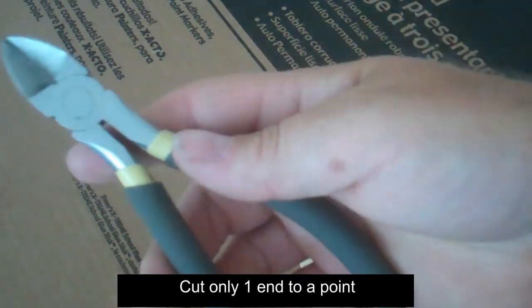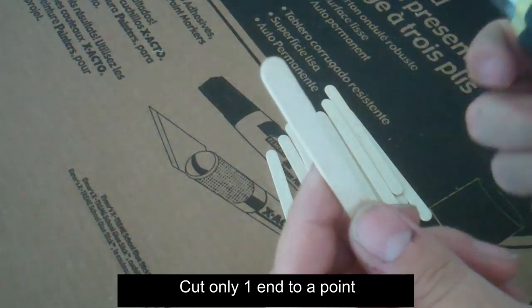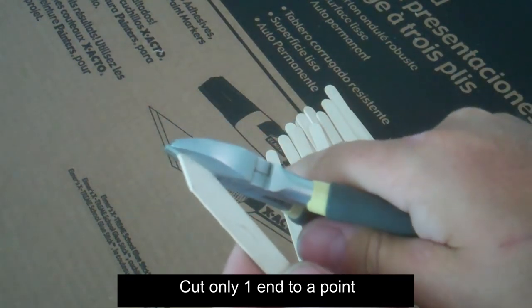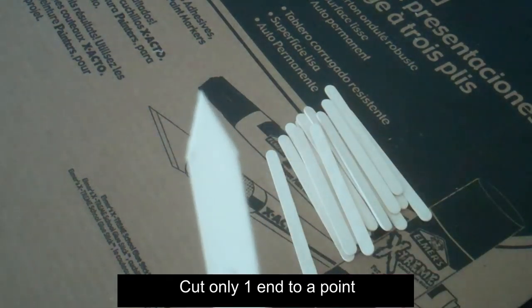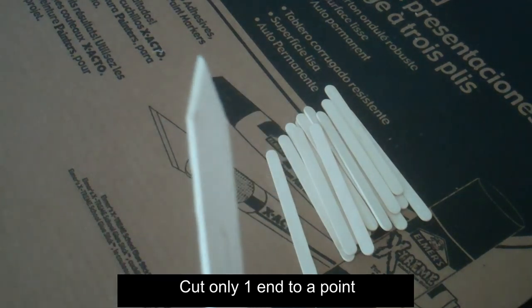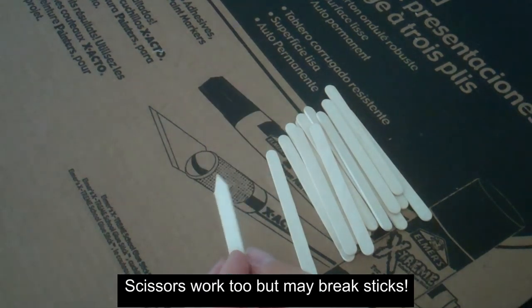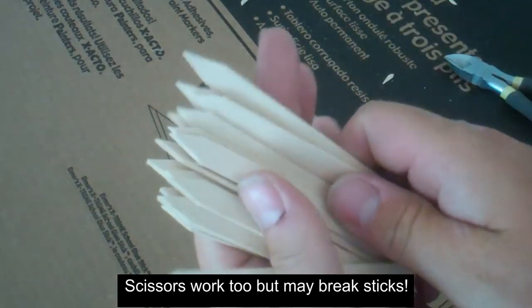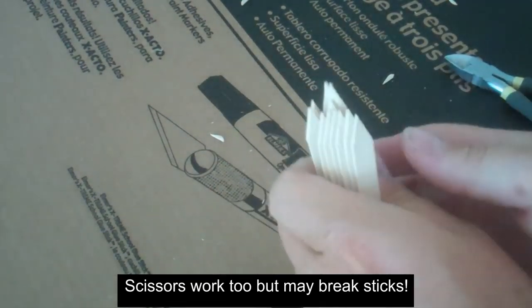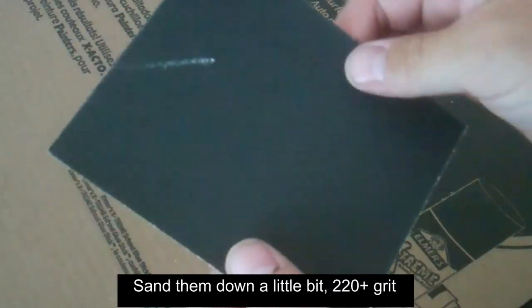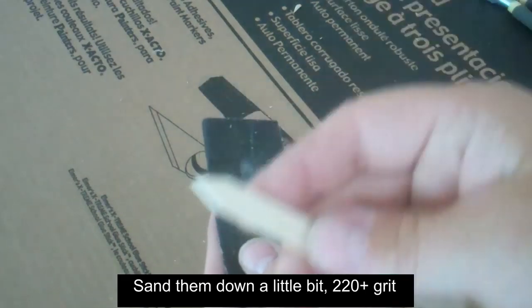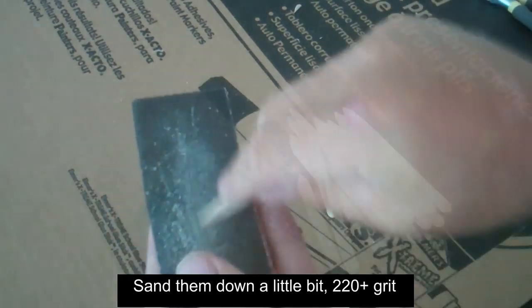First you will need 16 popsicle sticks. Using some sort of cutter, cut only one end of the stick to a point. When you are finished with that, feel free to sand down those edges with a high grit sandpaper to remove the burrs or any imperfections.